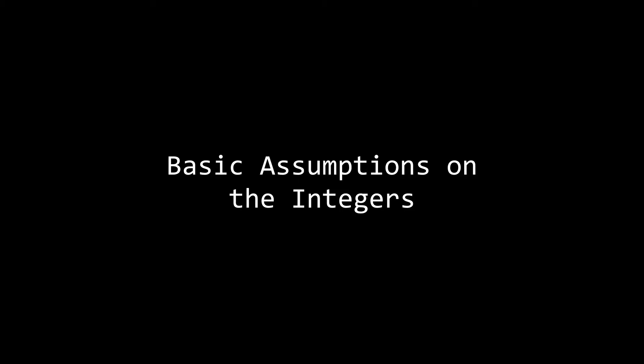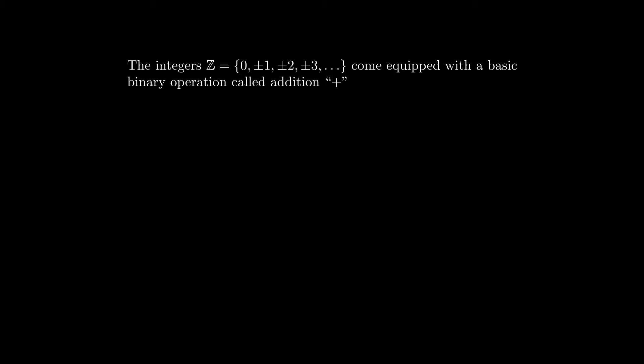Hello and welcome again to another video on number theory. Today I want to discuss some basic properties or basic assumptions on the integers that we will assume to be true. Let's recall that the integers are zero, plus or minus one, plus or minus two, and so on, and they come equipped with a basic binary operation that we call addition. I know you all know this, but let's go over some of the basic properties anyways.